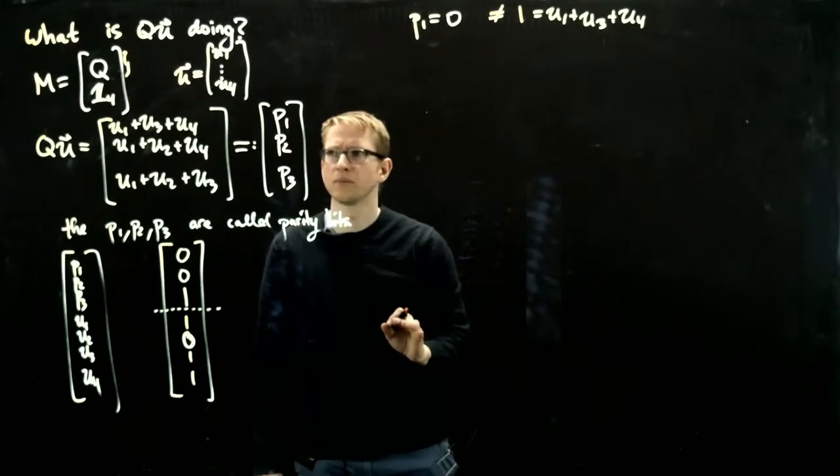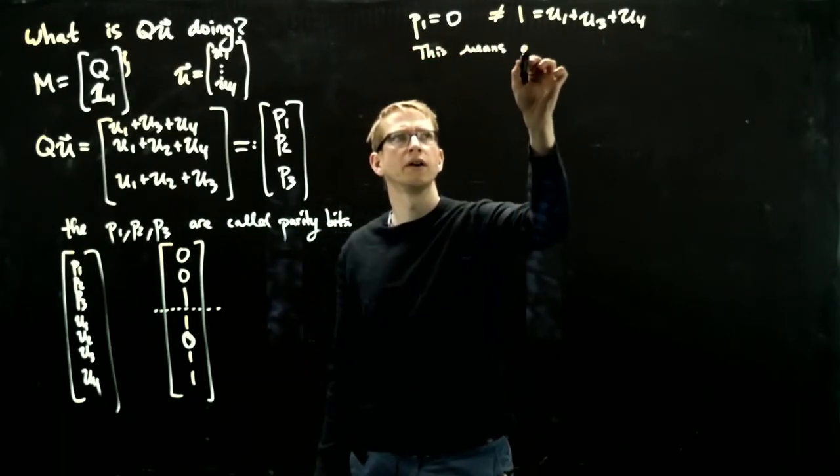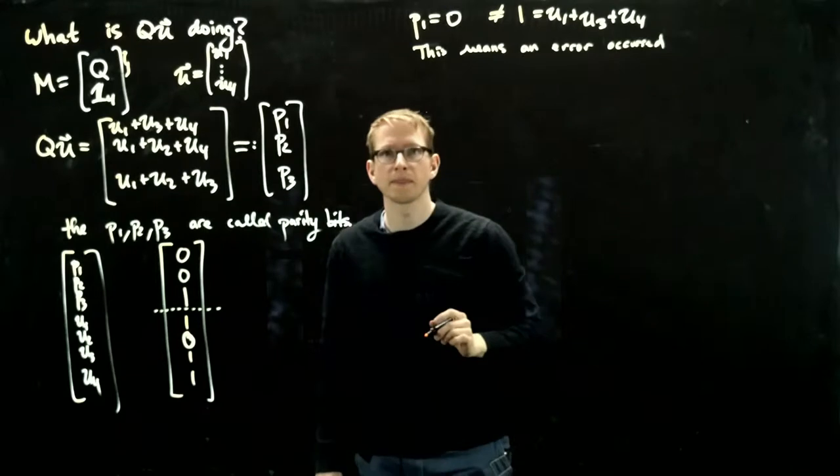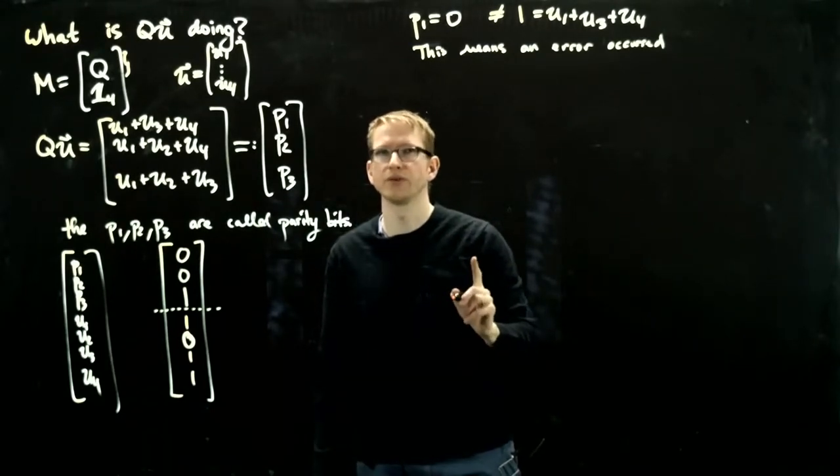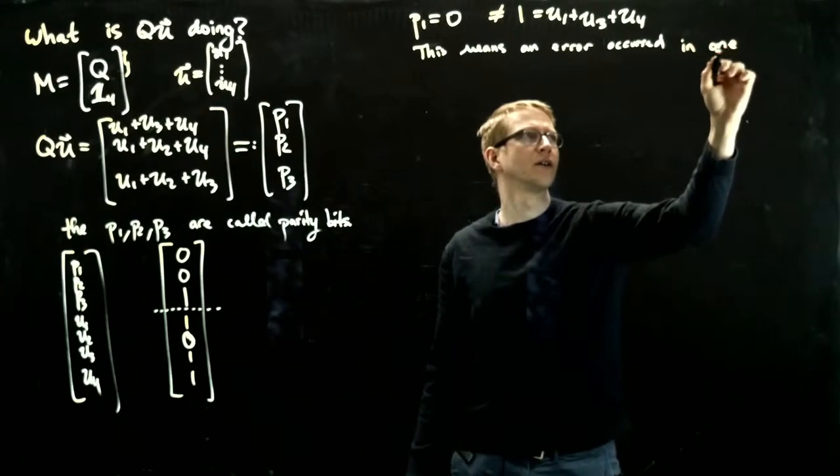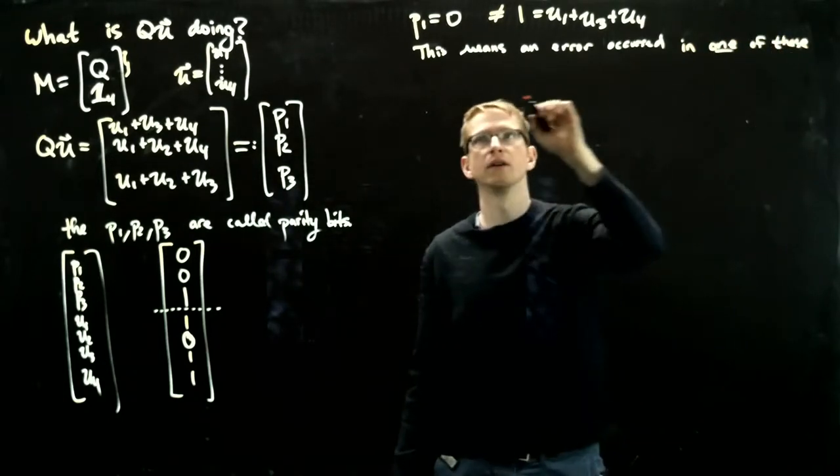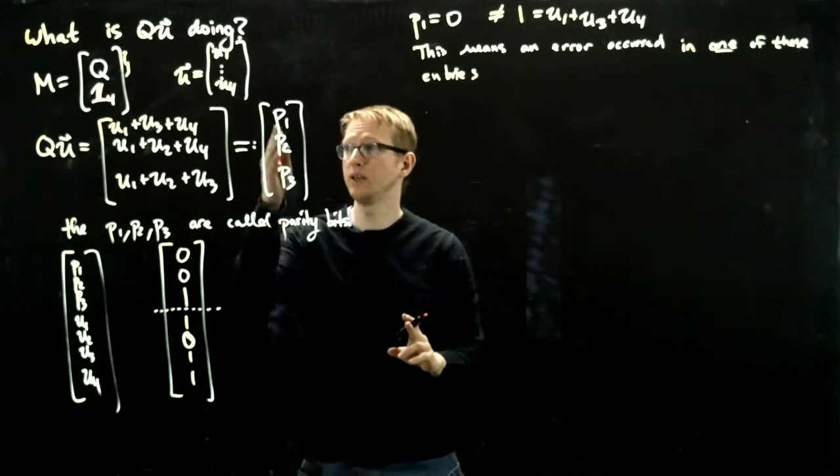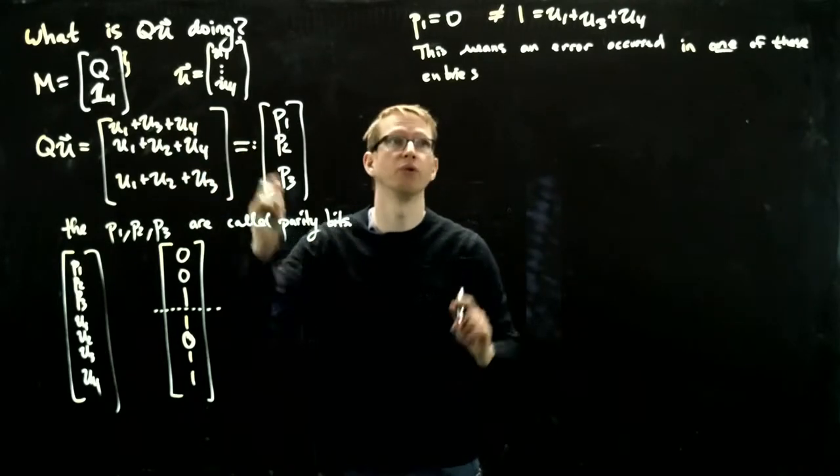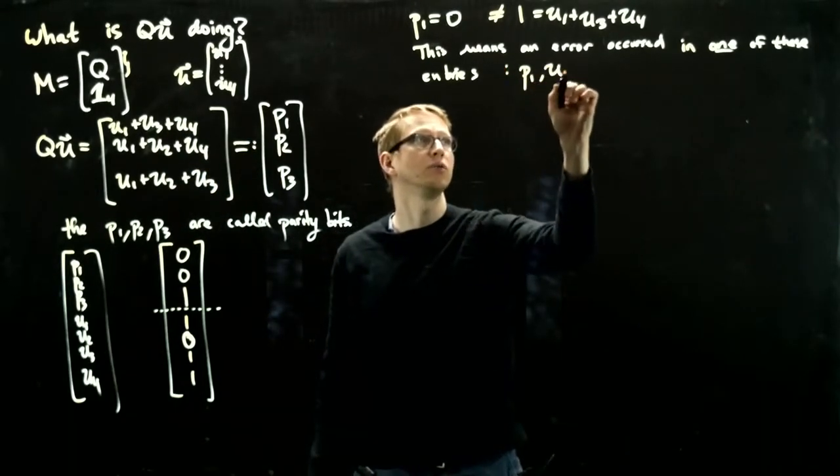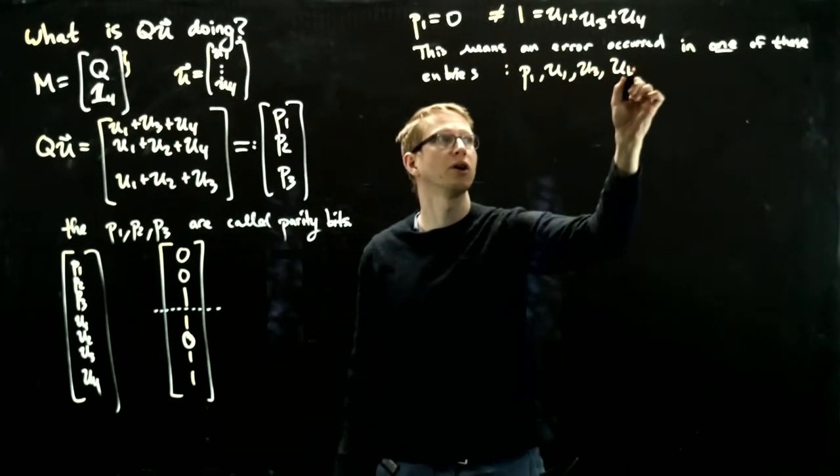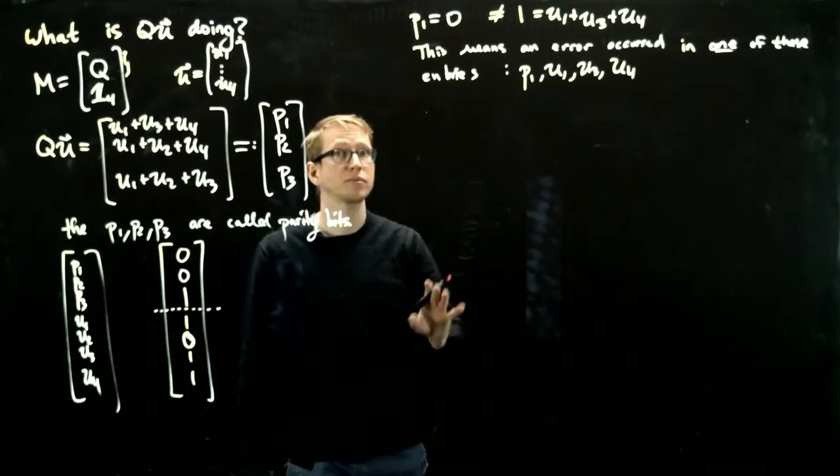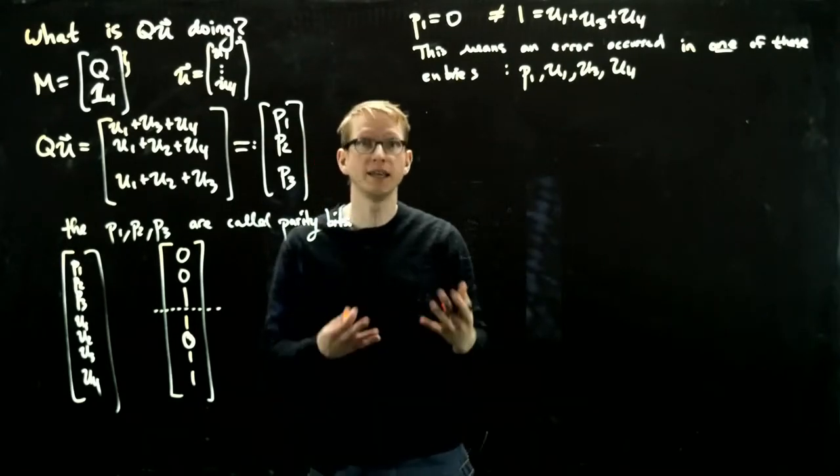What does this mean? This means an error occurred in one of these entries, either p1, u1, u3, or u4. We know it has to be exactly one because we're assuming at most one error occurred. Because of this inconsistency, we're guaranteed that an error occurred. The only way no error would occur is if all of these would be consistent.